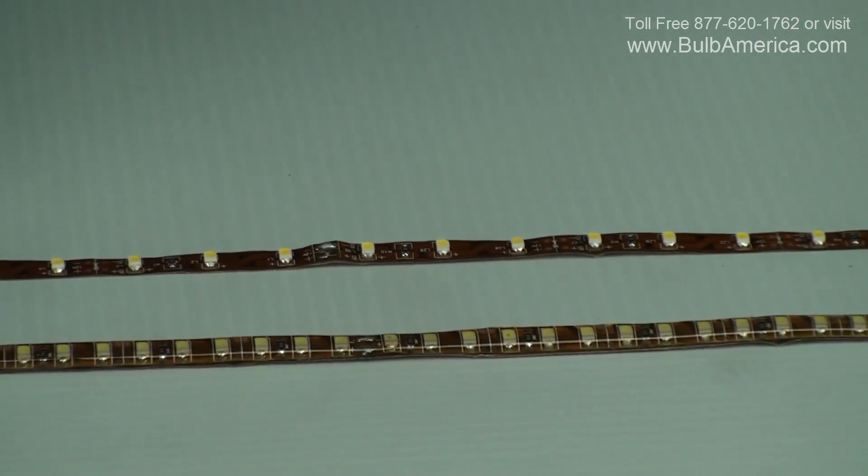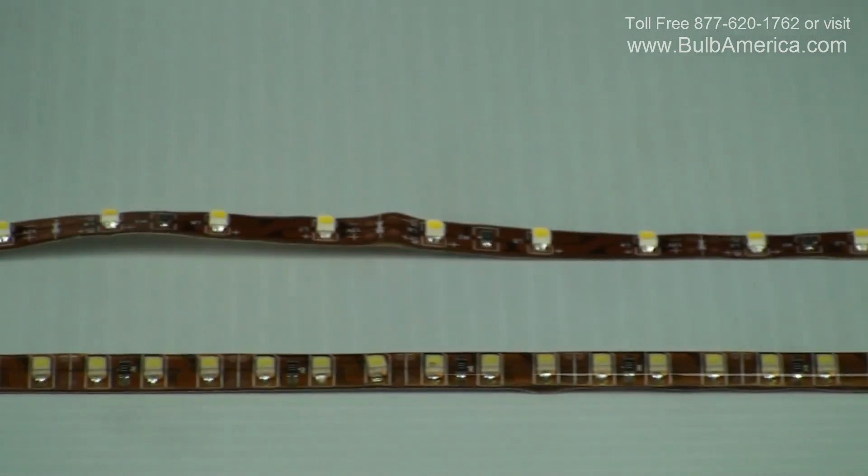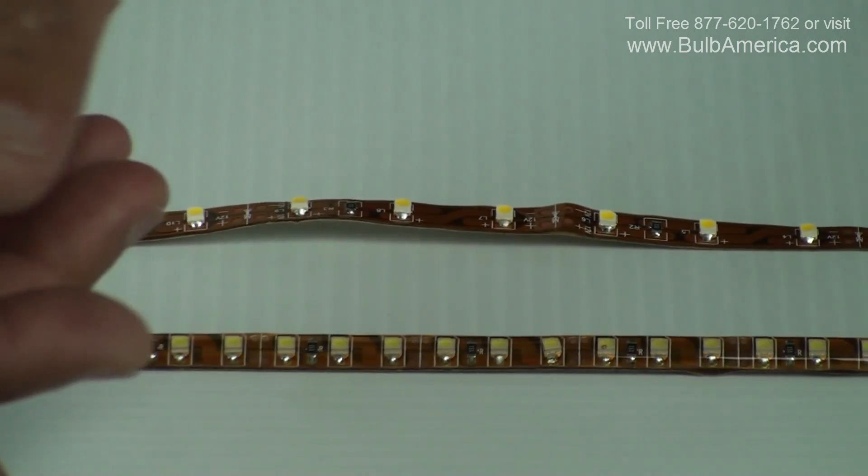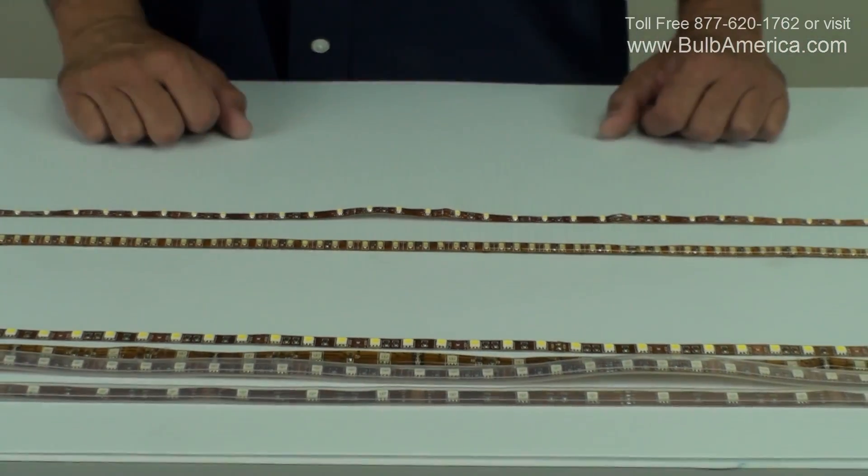The size of the LED, the number of LEDs, and of course, if it's a fixed color or an RGB. Silicone, epoxy, and uncovered—this is the uncovered, and that's what you have to know.